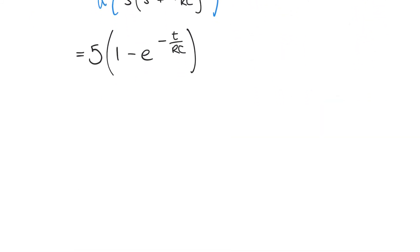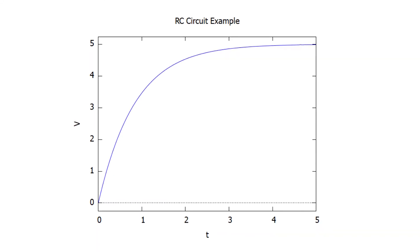For illustration, suppose the resistor is 1800 ohms (1.8 kilohms) and the capacitor is 470 microfarads. We can now calculate the output voltage over time and plot the response. What we see is the characteristic growth curve of a charging capacitor: the output voltage rises rapidly at first, then levels off as it approaches the step input height of 5 volts.